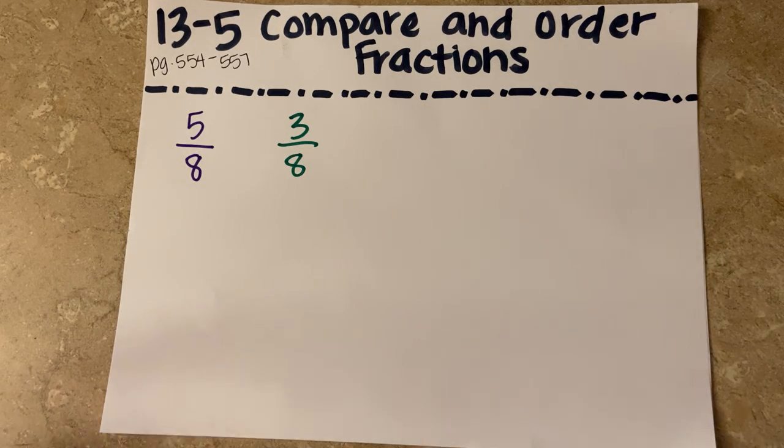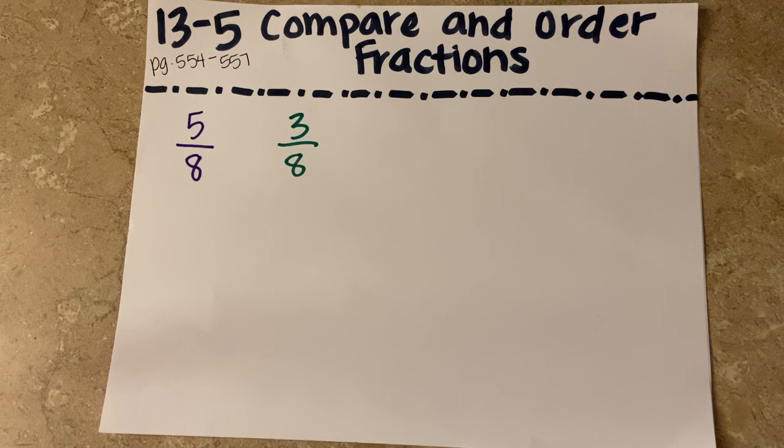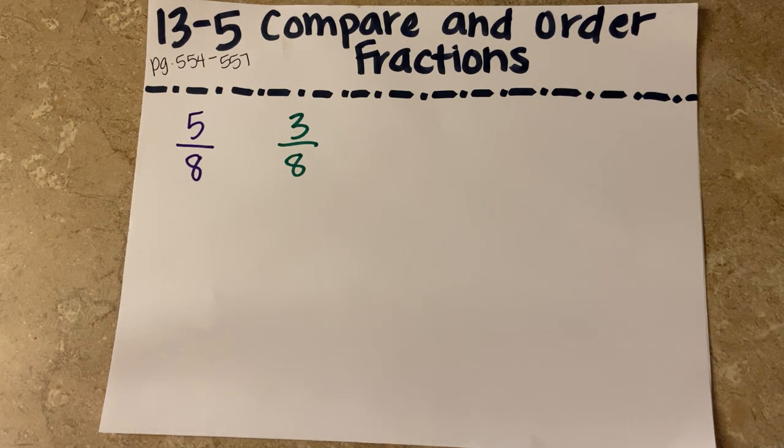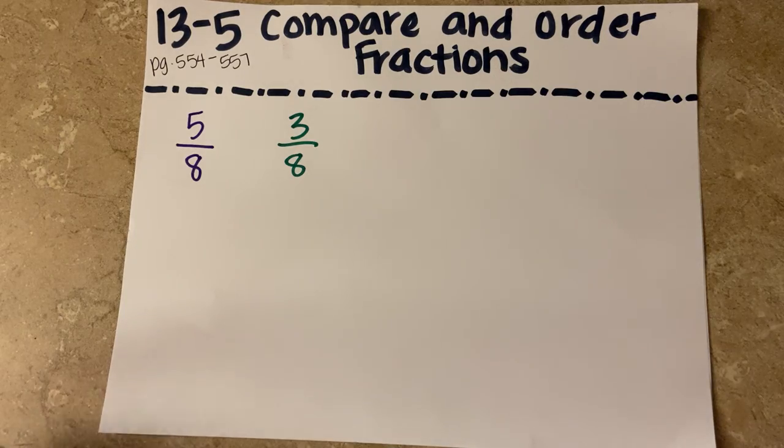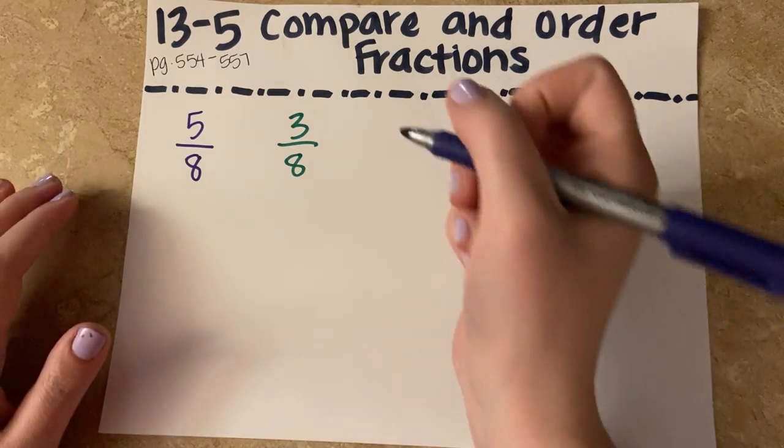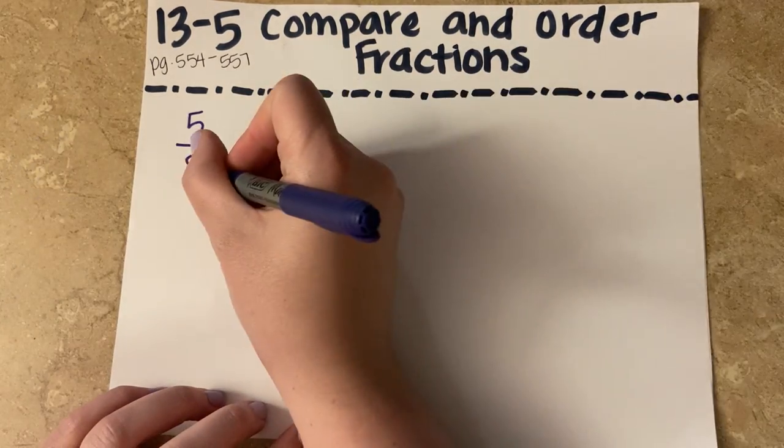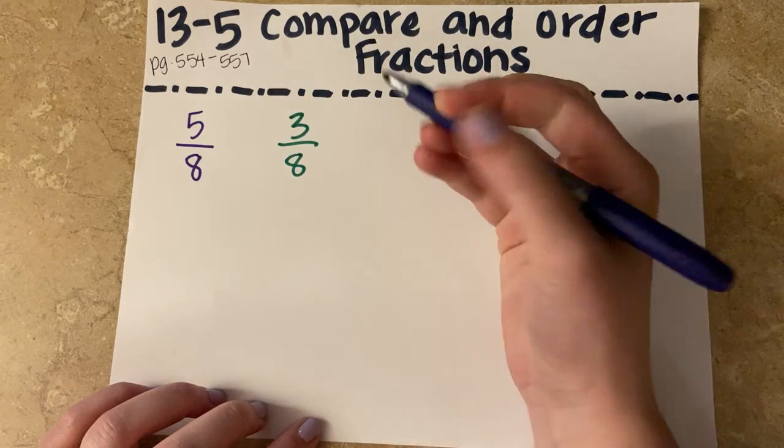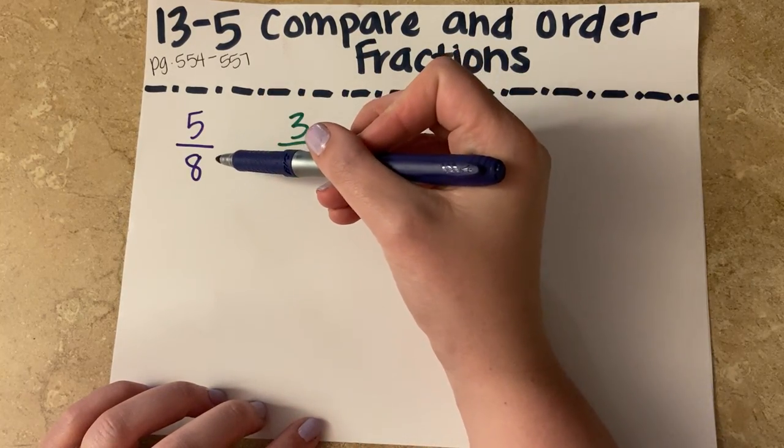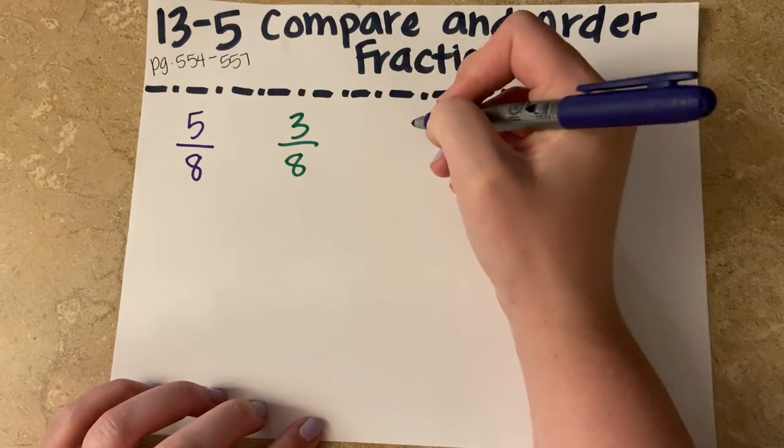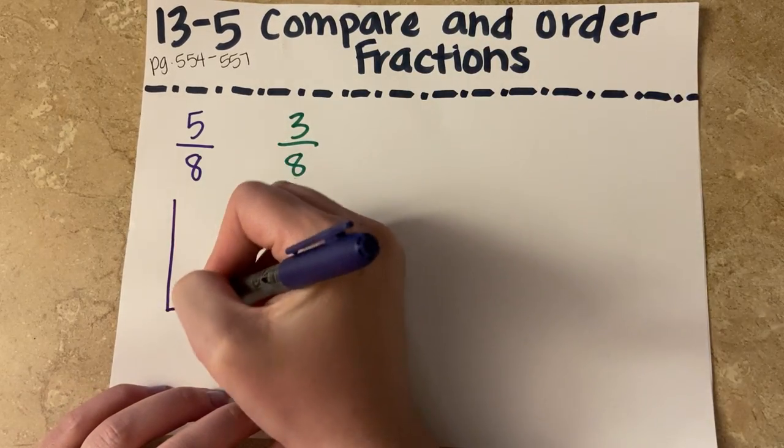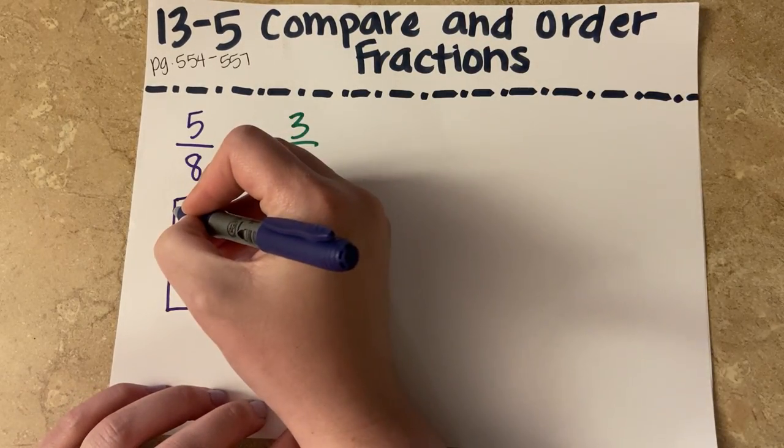For this one, you might be able to assume, but I'm going to show you kind of a couple ways to figure that out. So an easy way if you can't think about it on the top of your head is to draw a model of each one. So five-eighths, I'm going to draw a picture of. So that means my denominator is eight. That means how many total equal parts there are. So I'm going to draw a picture that has eight sections.